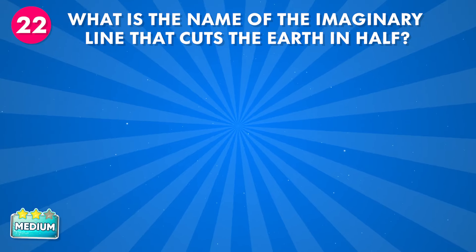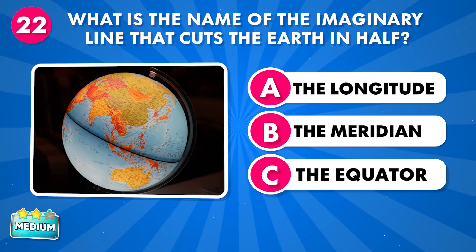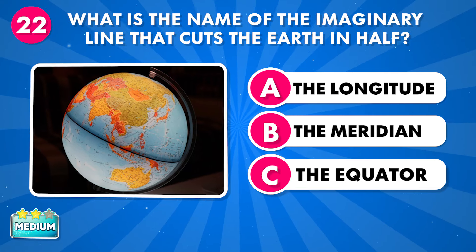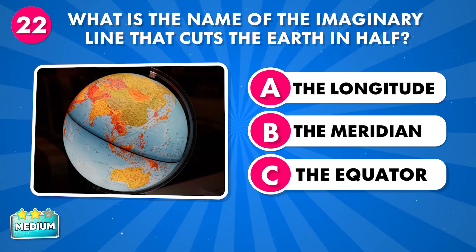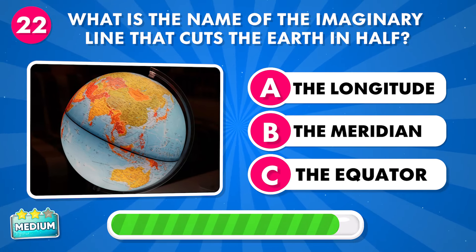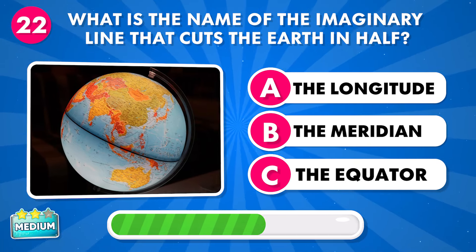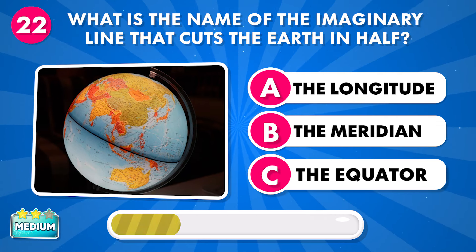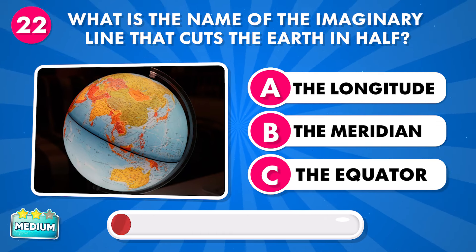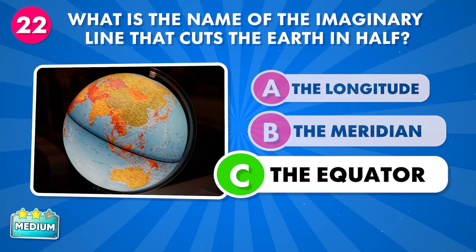What is the name of the imaginary line that cuts the Earth in half? A: the longitude, B: the meridian, C: the equator. It's the equator.